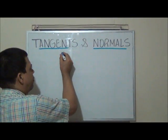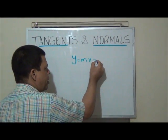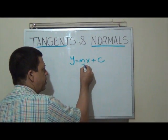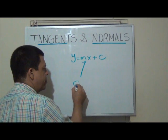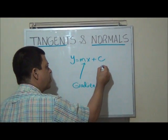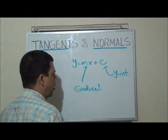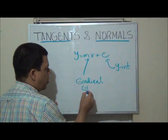Remember that every straight line is defined by y equals mx plus c. This value is called the gradient and this other value is called the y-intercept. This is also called the slope.